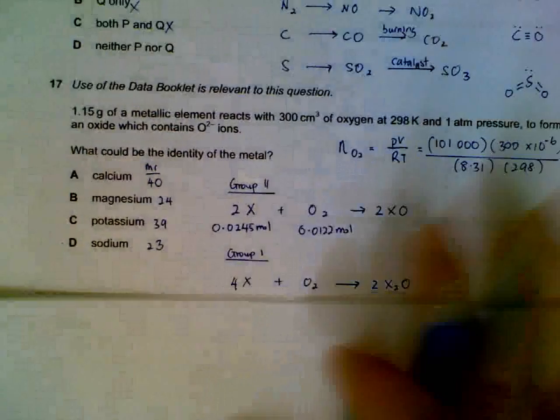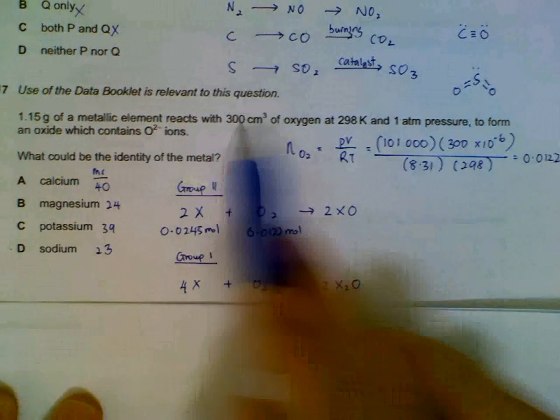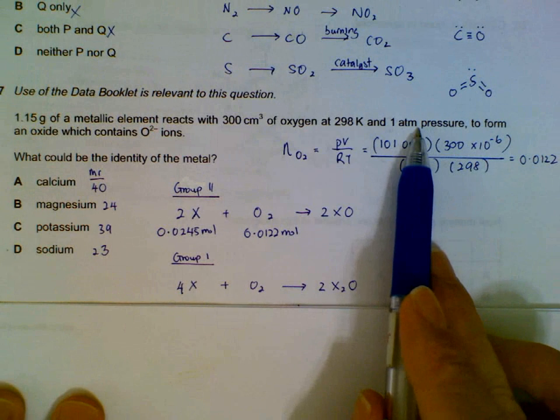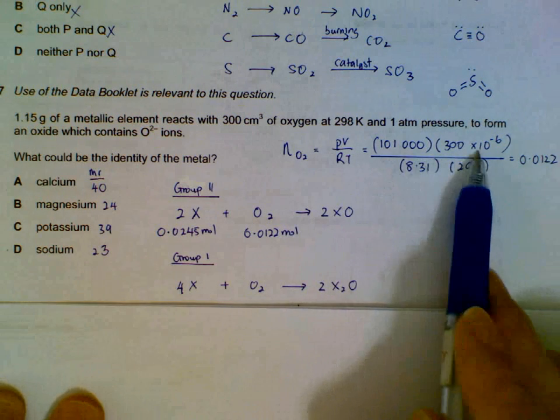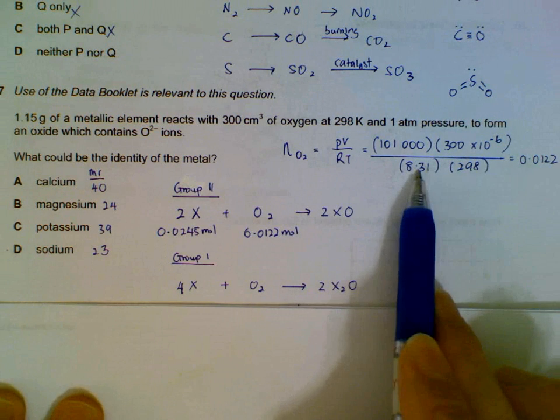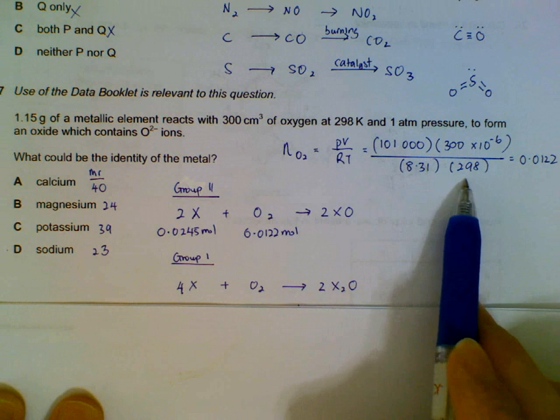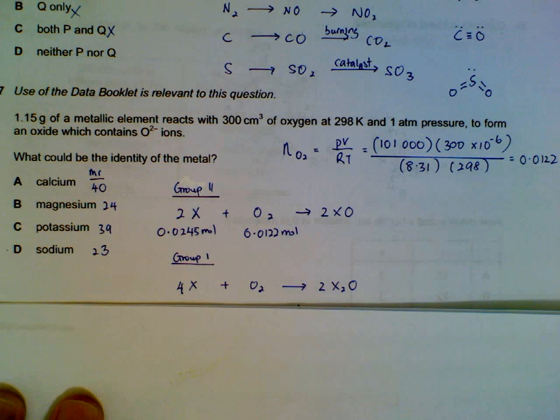Question 17. We have metal reacting with oxygen. With all this information, we can use the gas equation to find out the moles of oxygen reacted. PV over RT, Pascal, cubic meter, gas constant and temperature. So we have 0.0122 moles of oxygen involved.